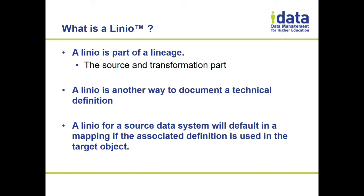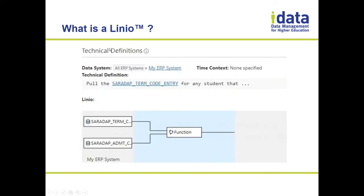For example, it might be a SELECT with some sort of concatenated value, or you might write out in English what it is, or you might explain that there's some procedure you call. Alineo is a version of that which is more spec-based. Here's an example: you might have a technical definition for admit term that says 'pull the term code entry for any student' — that's the narrative version.